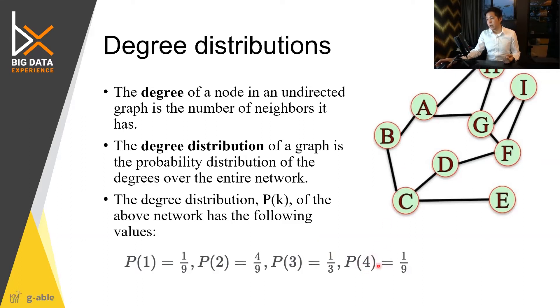And then one node that have degree of four, which is G, this one. So here degree distribution would explain the distribution of the degree from the low connectivity to high connectivity.